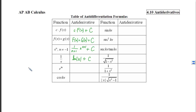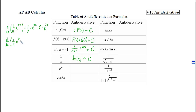For e to the kx, there's a function of x in the exponent, so we think about the chain rule in reverse. If we differentiate one-half e to the 2x, the twos cancel and we get e to the 2x. With a coefficient of 1 over k, the derivative is 1 over k times e to the kx times k — the k's cancel. So the antiderivative of e to the kx is 1 over k times e to the kx plus an arbitrary constant c.